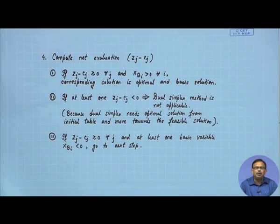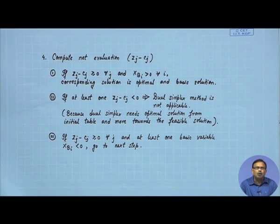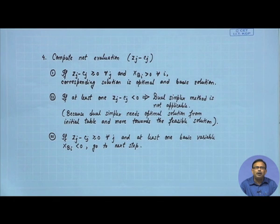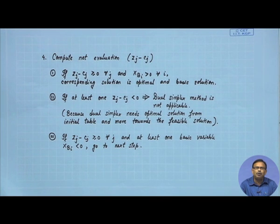Step 4: compute the net evaluation zj minus cj. Three cases may occur. Case 1: if zj minus cj ≥ 0 for all j and xbi > 0 for all i, then the solution is optimal. Case 2: if at least one zj minus cj is less than 0, then the dual simplex method is not applicable, because the basic criteria — that the initial solution is optimal — is not satisfied. Case 3: if zj minus cj ≥ 0 for all j but at least one basic variable xbi is less than 0, follow the next step.